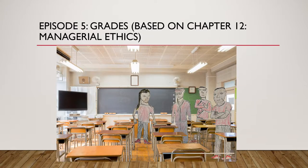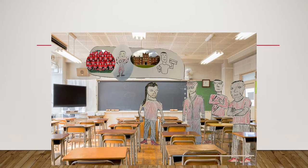We will now analyze how we use concepts of management in Episode 5, Grades, based on Chapter 12, Managerial Ethics. The coaches meet with academic advisor Alicia to discuss one of the player's failing grades. Alicia says she will have to pull Matt from the team if he fails another class this semester. Thomas suggests a utilitarian approach for the greater good of Matt, the university, and another student — giving another student a scholarship for doing all of Matt's work for him.